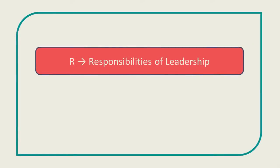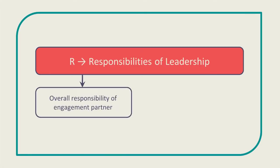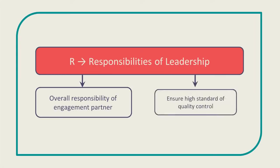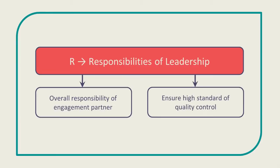The R is for responsibilities of leadership. The engagement partner must take overall responsibility for the audit team and the audit process. This means that they must also ensure the quality control procedures within the firm are of a high standard so as to follow professional standards accordingly.